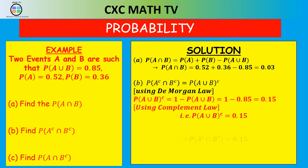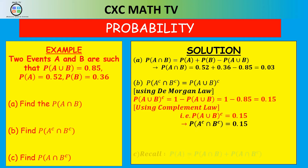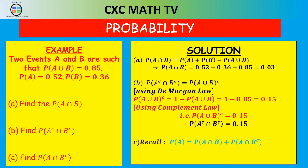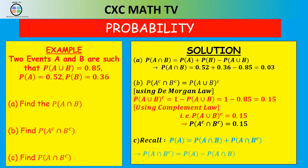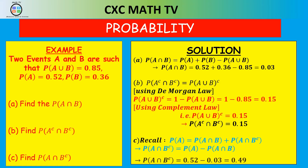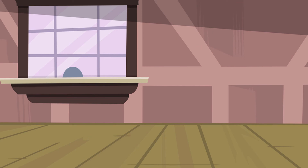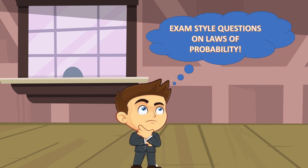For part C, recall rule three: the probability of A equals the probability of A intersect B plus the probability of A intersect B complement. Making A intersect B complement the subject: it equals probability of A minus probability of A intersect B, which is 0.52 minus 0.03, giving 0.49. So the probability of A intersect B complement is 0.49.